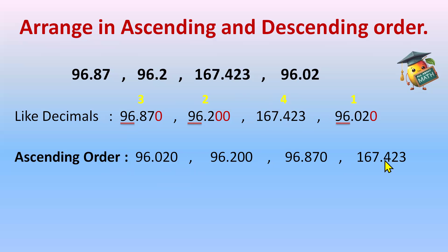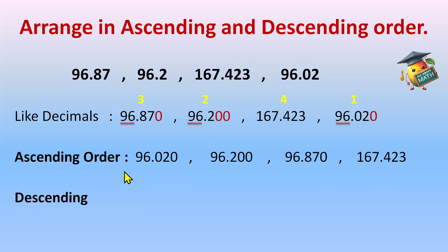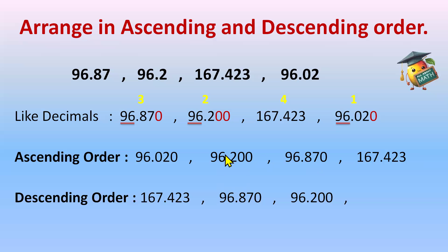So the ascending order is: 96.020, 96.200, 96.870, and 167.423 — arranged from smallest to largest. For descending order, we simply reverse the ascending order: 167.423, 96.870, 96.200, and 96.020. Once you've written one order, writing the other is very easy.